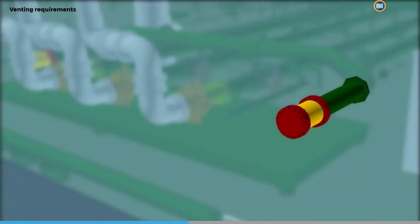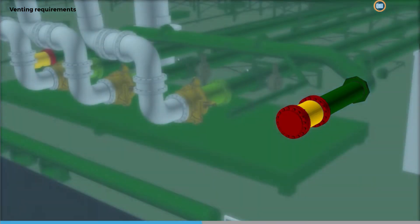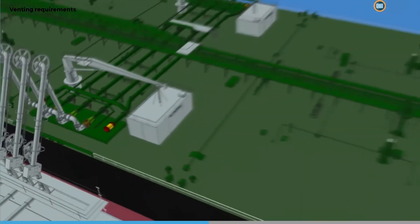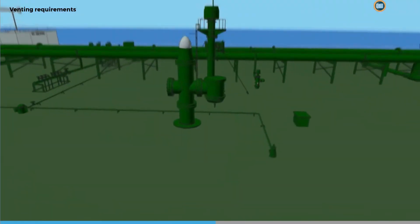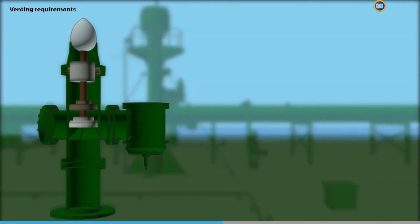Some crude oil tankers are fitted with vapor emission control manifolds. Where mast riser venting is used as the primary venting system during loading, a full flow pressure vacuum valve needs to be fitted as a secondary means.